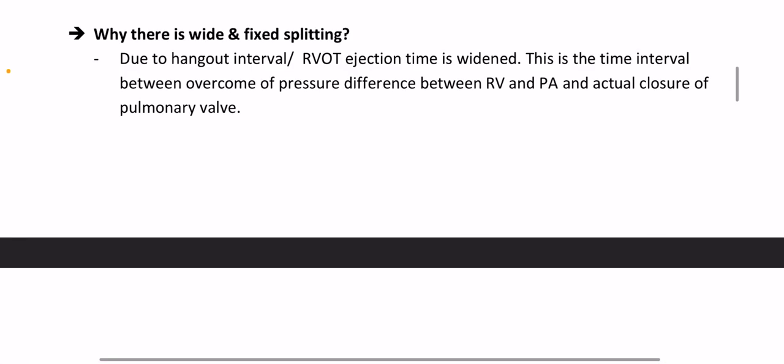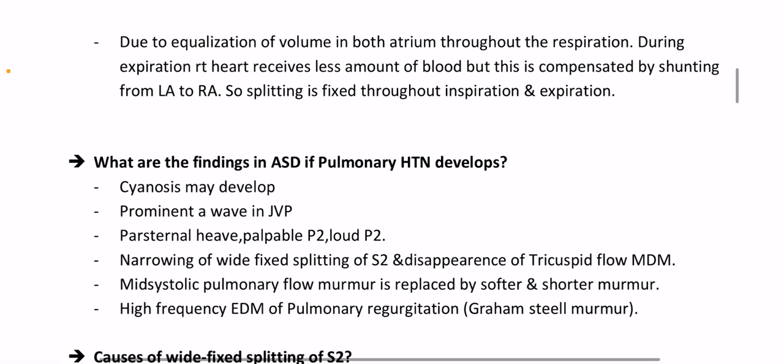Why is there wide fixed splitting of the second heart sound? Due to the hangout interval while RV ejection time is widened — this is the time interval between overcoming the pressure difference between the RV and pulmonary artery and actual closure of the pulmonary valve. Due to equalization of volume in both atria throughout respiration: during expiration, the right heart receives less blood, but this is compensated by shunting from LA to RA, so splitting is fixed throughout inspiration and expiration.